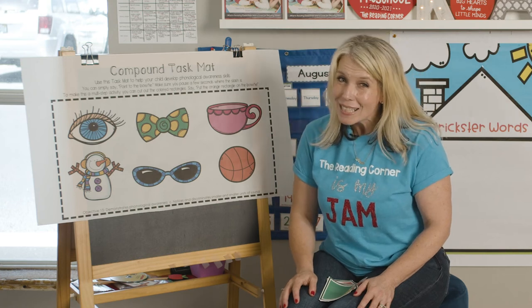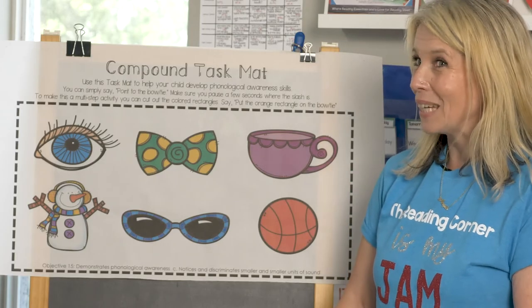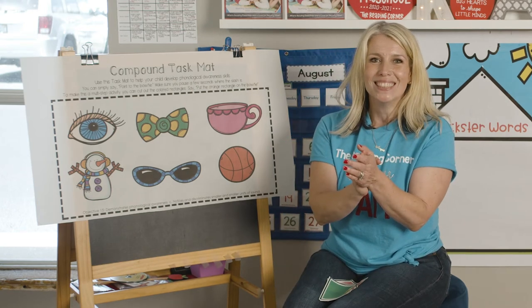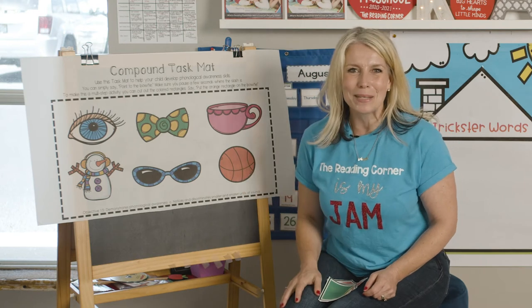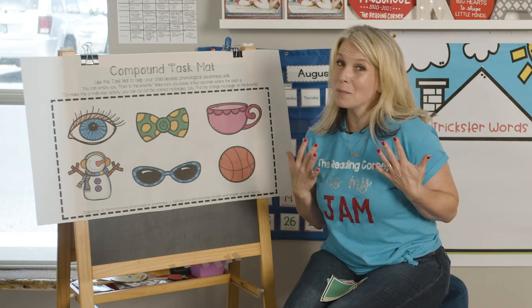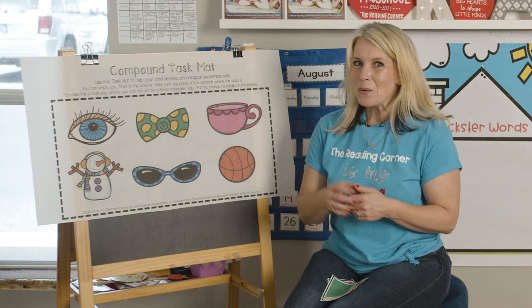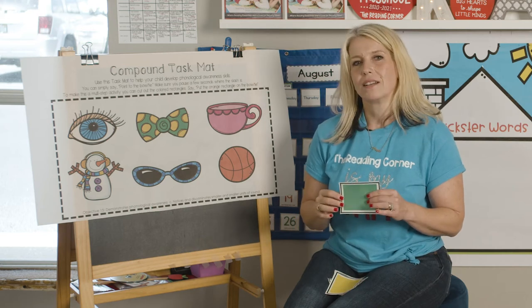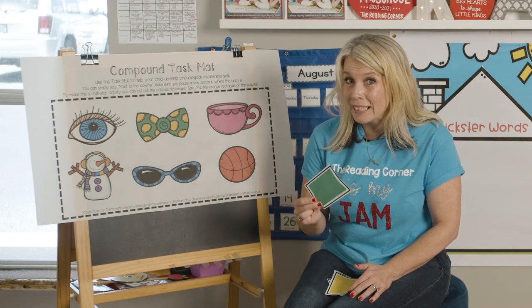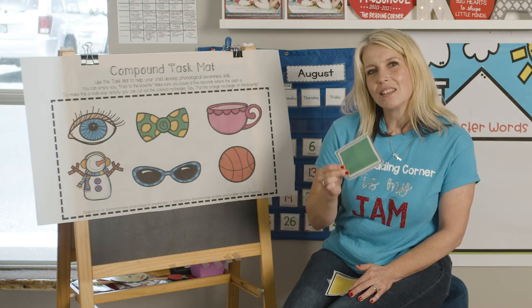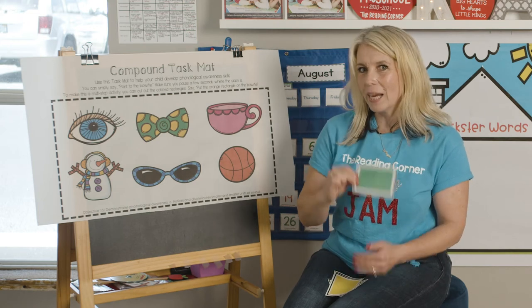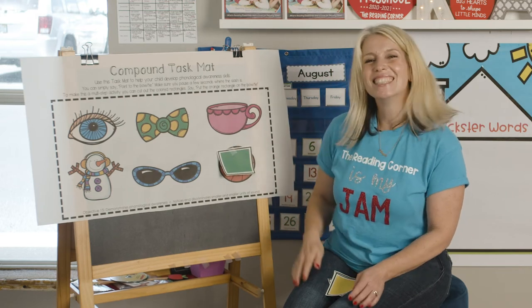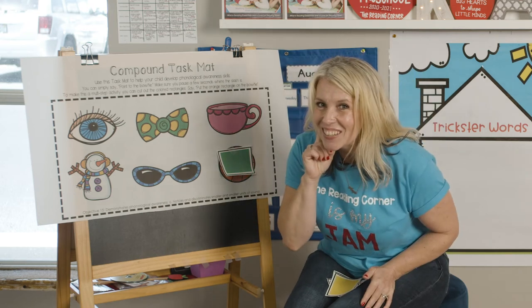Last but not least, can you point to the basketball? Can you find it on your task mat? There it is. Let's clap this word. Basketball. These two words have three syllables — the rest of them only had two. This is where it gets a little trickier. Are you ready for a challenge? We're going to use our listening ears and see if we know our colors. I'm going to start with this green rectangle. Can you place the green rectangle on the basketball? Go ahead and do it now.